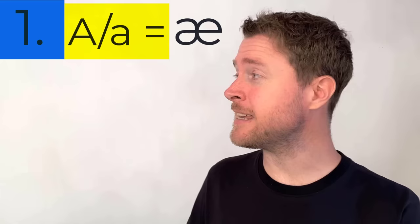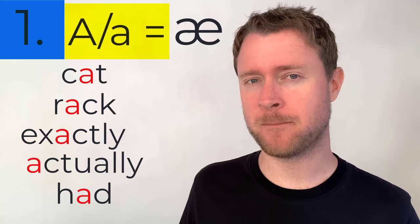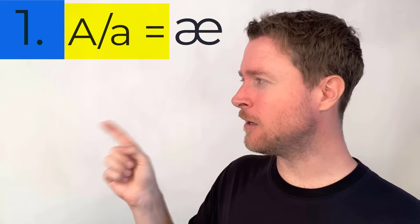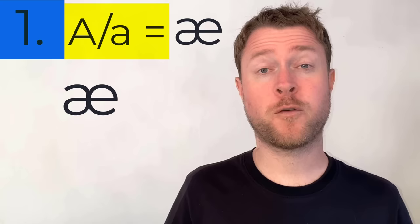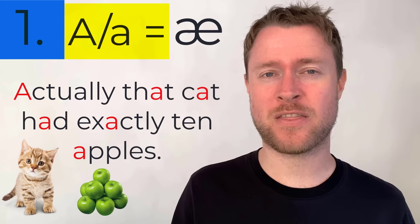We're going to have a good listen at all seven ways to pronounce this sound. Starting with number one: the A as in 'cat,' 'rack,' 'exactly,' 'actually,' and 'had.' This is that 'ah' sound — 'ah.' The IPA transcription looks like this: 'ah.' For a practice sentence, try this: 'Actually that cat had exactly ten apples.'